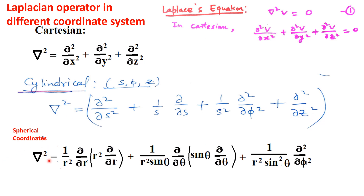In spherical coordinates, del squared equals (1/R squared)(delta/delta R)(R squared delta/delta R), plus a term for theta and a term for phi. Depending on the situation, we can use del squared for different coordinate systems, and we will see some examples based on different coordinate systems.